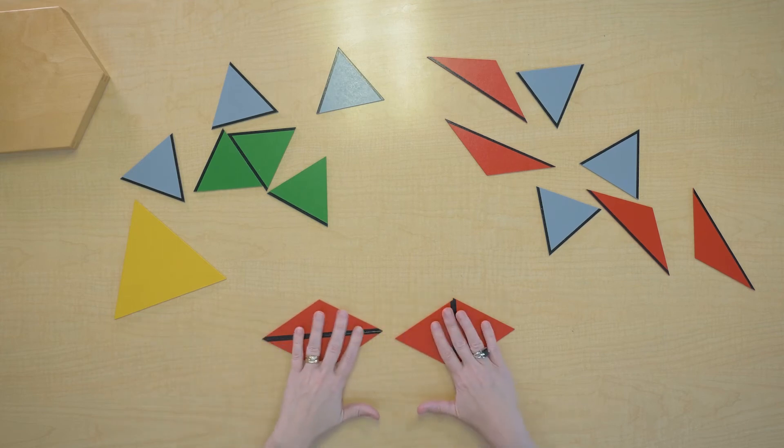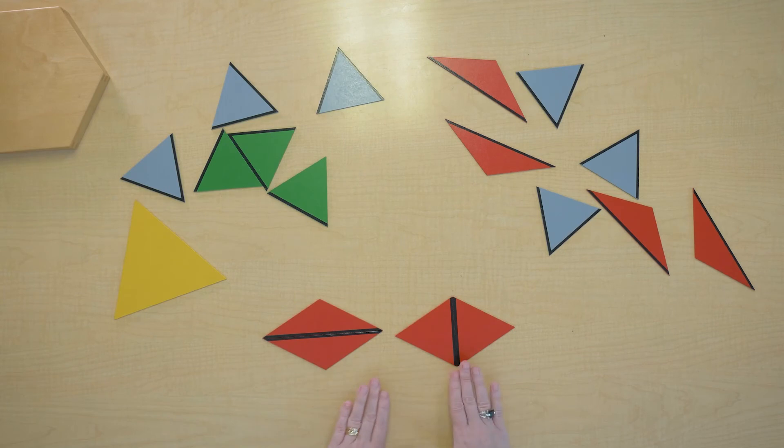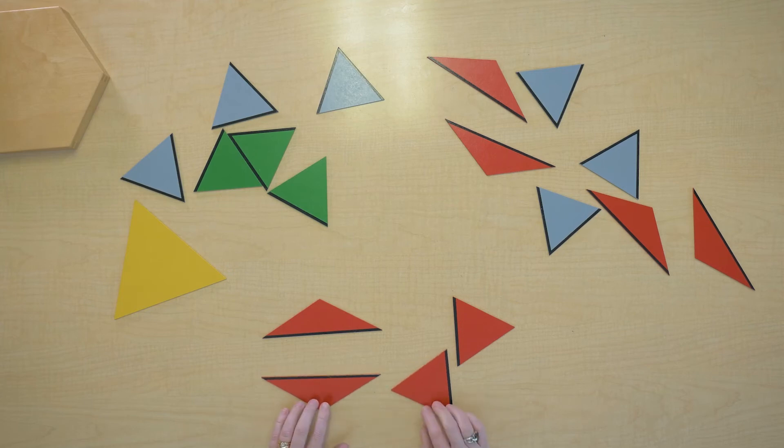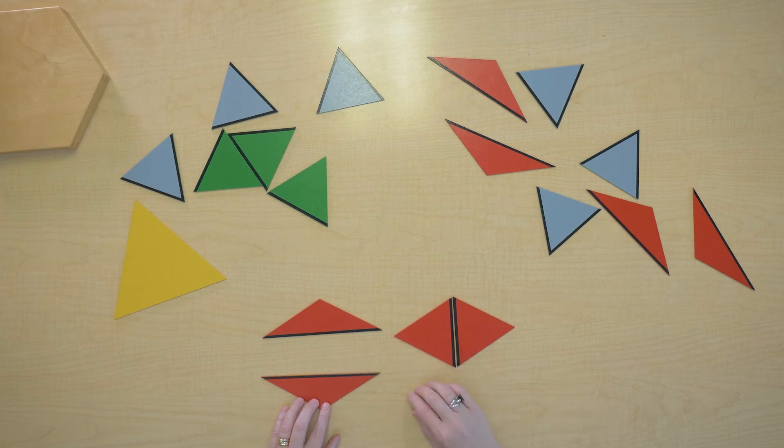This is a useful tool when we're doing this work with equivalents to remember that these two equal these two, which means this triangle is equivalent to this triangle. They are each half of the same rhombus. So this triangle is equivalent to this triangle. This can help us when we're building some more equivalent pictures.